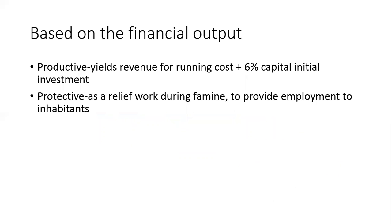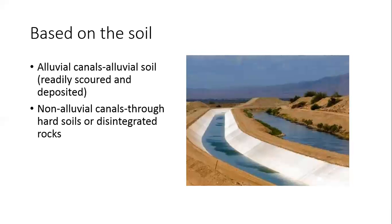Based on financial output, there are productive canals and protective canals. Productive canals yield revenue covering running costs plus 6% of the capital initial investment, whereas protective canals are built as relief work during famine to provide employment to nearby inhabitants. Based on soil, the classification is alluvial and non-alluvial. Alluvial canals are made through alluvial soil where scouring and deposition functions are prominent, whereas non-alluvial canals pass through hard soil, strata, or disintegrated rocks.